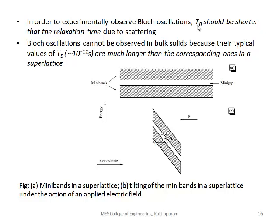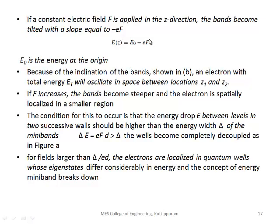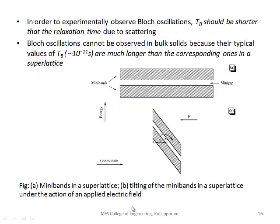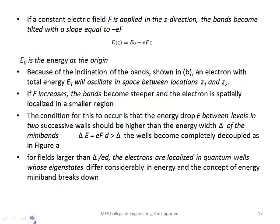When the miniband gets tilted, the energy at a particular distance E(z) = E0 - eFz, where E0 is the energy at the origin, F is the applied field, z is the distance, and e is the electron charge. The electron will oscillate in space between positions z1 and z2.